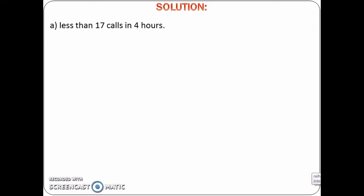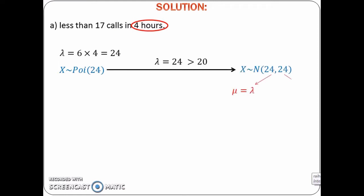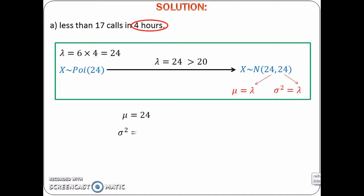In question A, the interval has been changed to 4 hours. For a 4-hour interval, lambda is equal to 24. Note that now we have a Poisson distribution with lambda greater than 20. Thus, this Poisson distribution can be approximated to a normal distribution with mean equals to 24 and variance equals to 24. Since variance equals 24, standard deviation equals 4.899.